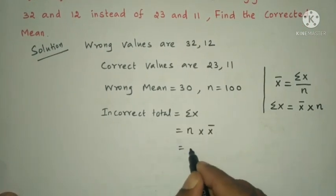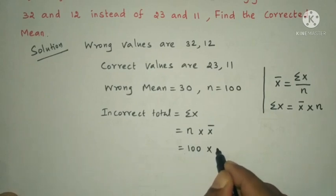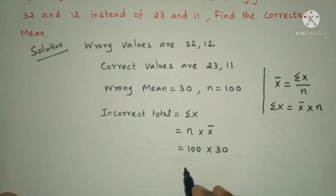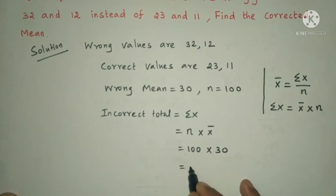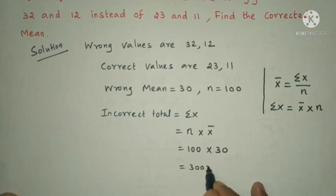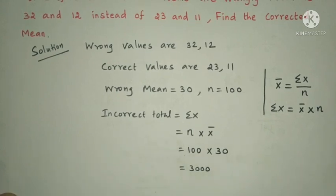The number of data is 100. So 100 × x̄ = 100 × 30 = 3000. That is the incorrect total value.